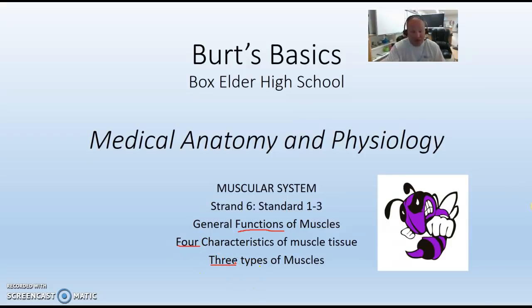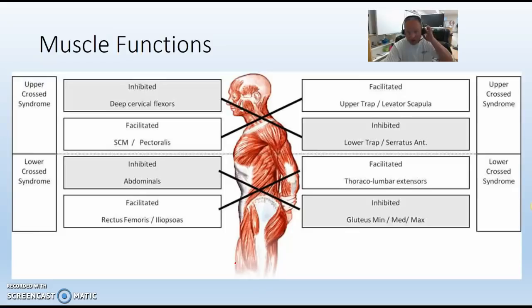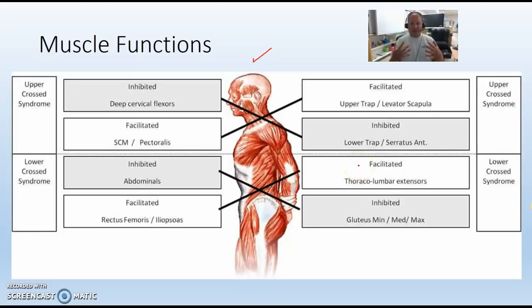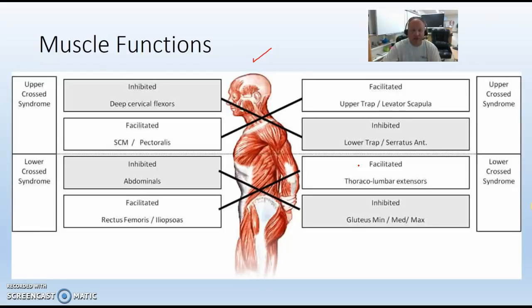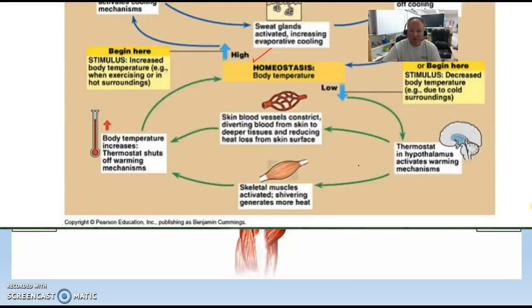When we talk about functions of muscles, almost everyone gets the main ones but a couple catch people off guard. The first is posture — muscles help us sit straight up in our chair. The only way to really understand this is if you've ever seen someone pass out in class: the skeletal muscles relax and they slide out of the chair like a jelly worm.